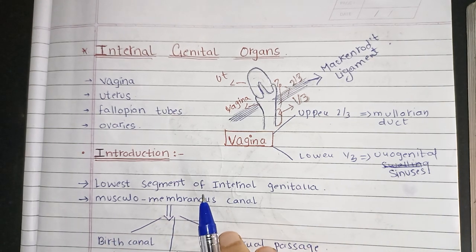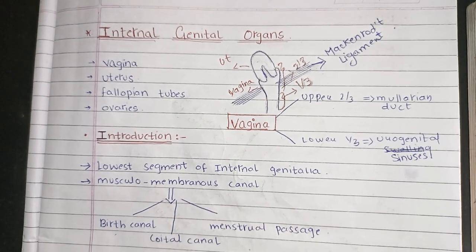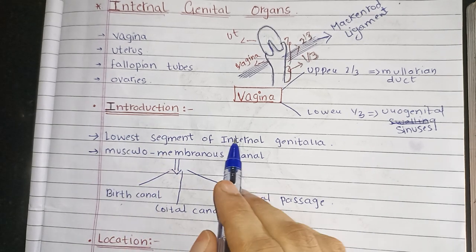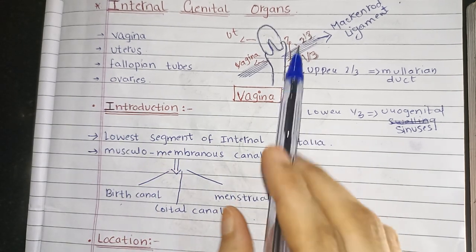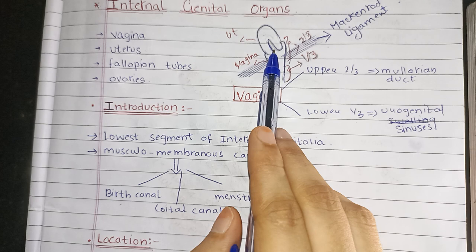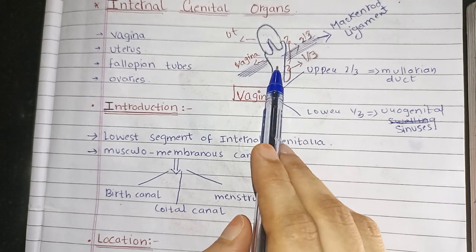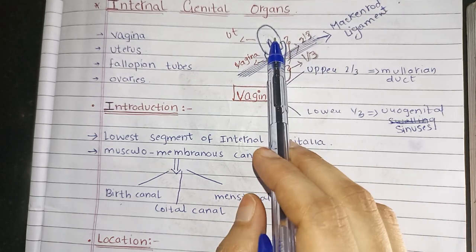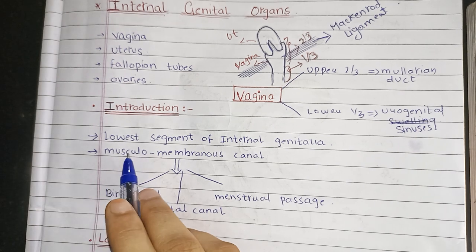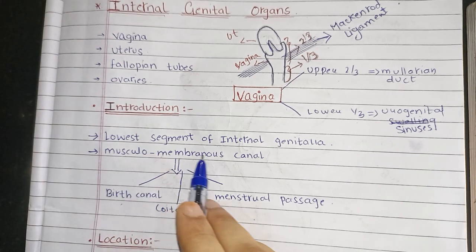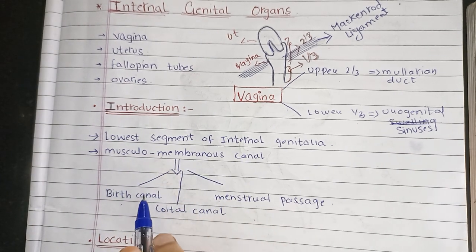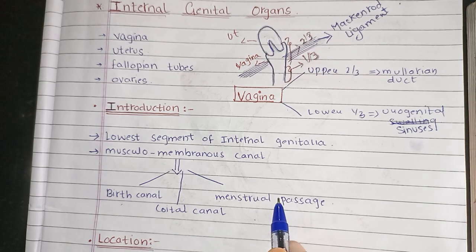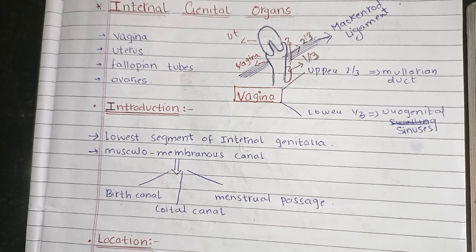Now coming to its introductory part. Vagina is the lowest segment of the internal genitalia because first uterus comes, then the cervix, and then the vagina. It forms the lower segment of the internal genitalia and it is a muscular membranous canal which serves as birth canal, coital canal, and the menstrual passage.